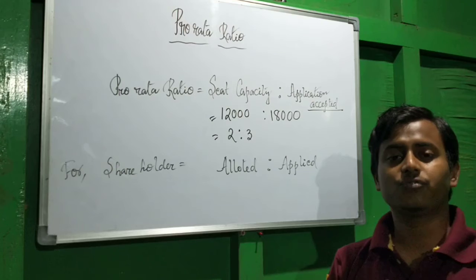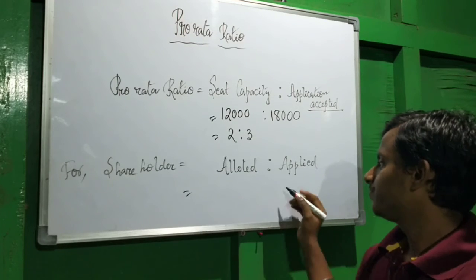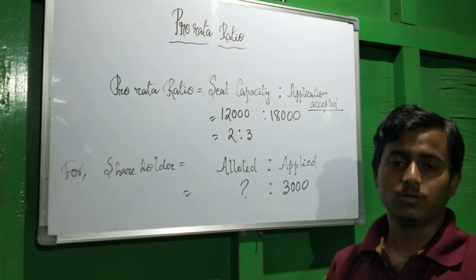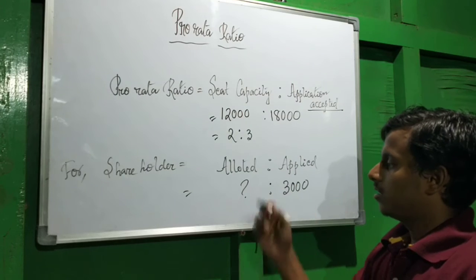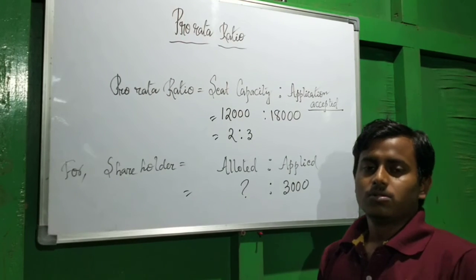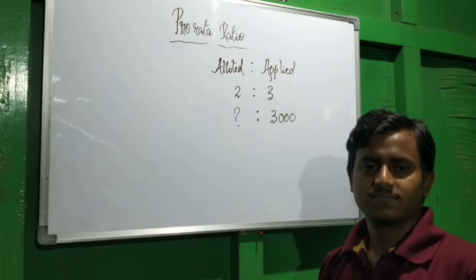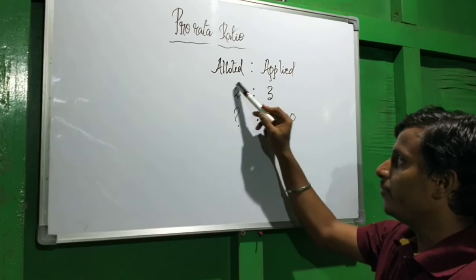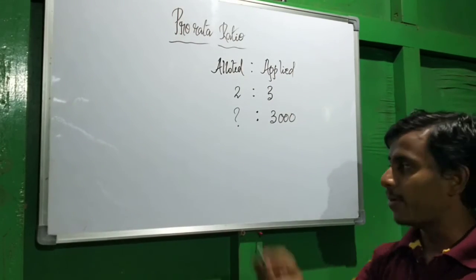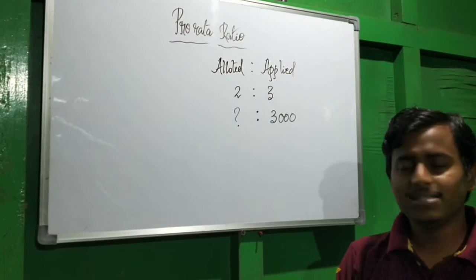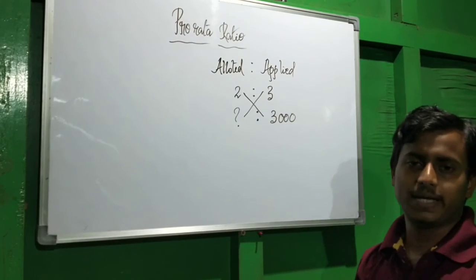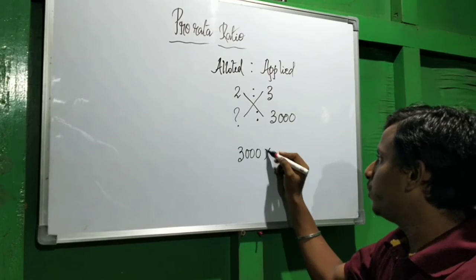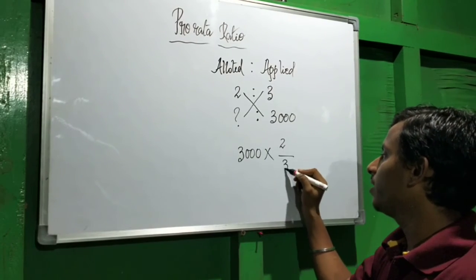Suppose I have applied for 3,000 shares — how many shares will I be getting? We apply the formula: allotted is to applied. We have the pro rata ratio 2 is to 3. I applied for 3,000 shares and I don't know how much I'll be allotted. Using cross multiplication: 3,000 multiplied by 2, divided by 3 — that gives us the shares allotted.